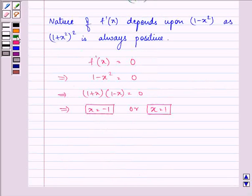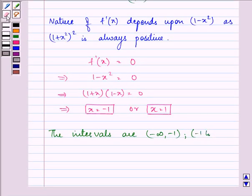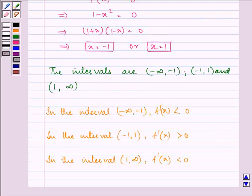So, we have the intervals as minus infinity to minus 1, then minus 1 to 1, and 1 to infinity. Now, in these three intervals, we will be finding out whether f dash x is less than 0 or greater than 0.